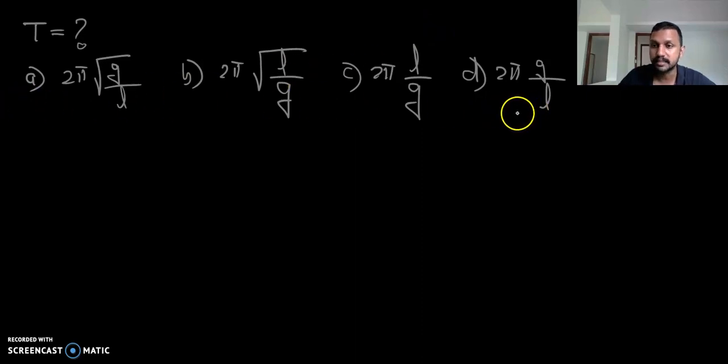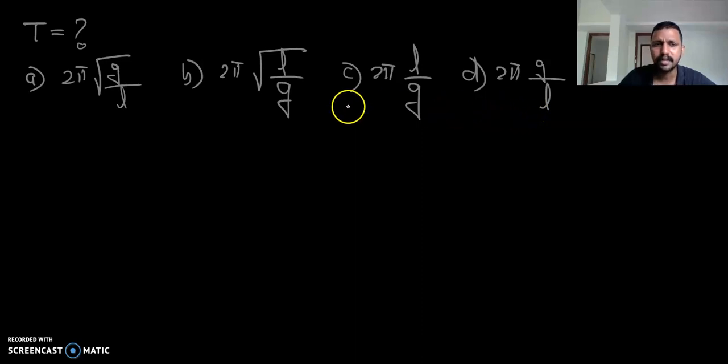Using dimensional analysis, we can check which option is correct for the time period of a simple pendulum.